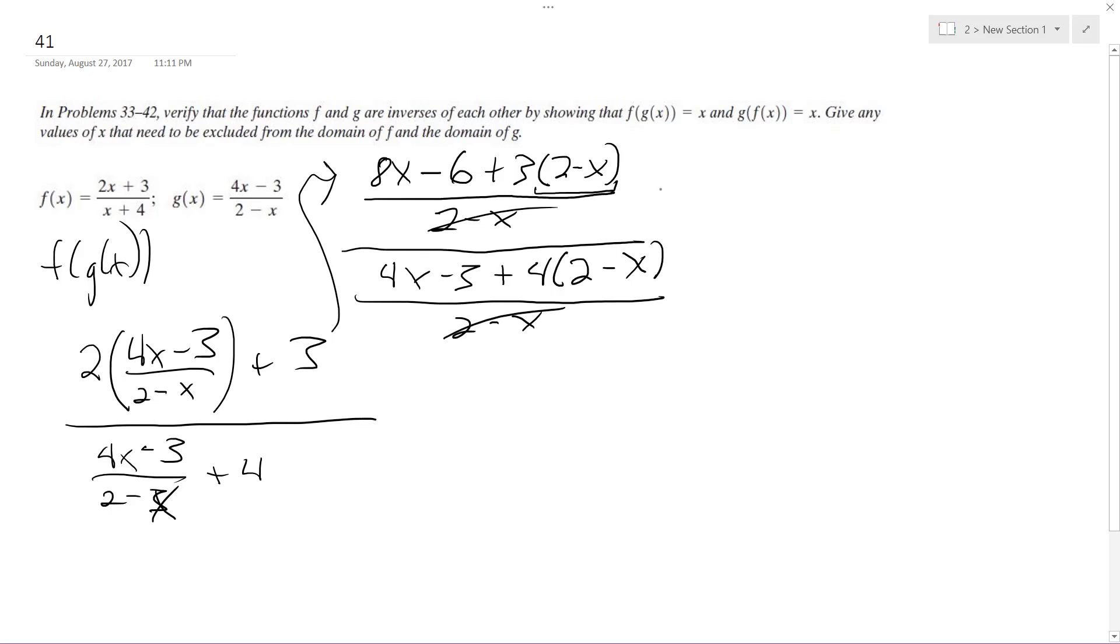OK, and this is all over 2 minus x. So these 2 minus x's cancel out. It's like the reciprocal equation. So if you were to, you can multiply this out. So it would be 2 minus x over the 4x minus 3 plus 4 quantity 2 minus x.